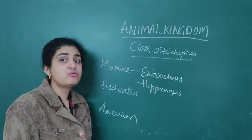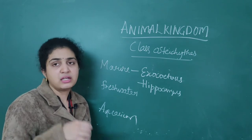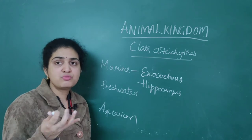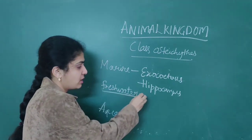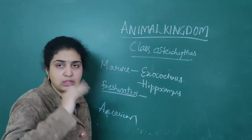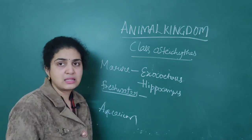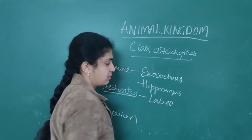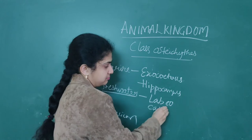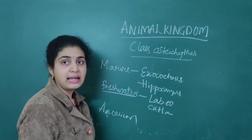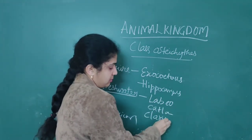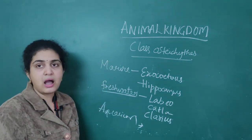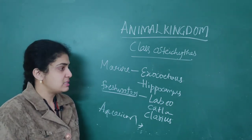When you come to freshwater organisms, there are three: Labeo, Catla, and Clarias. These three freshwater organisms are important to remember, especially as exam questions frequently ask which are freshwater organisms in this class.